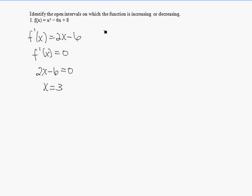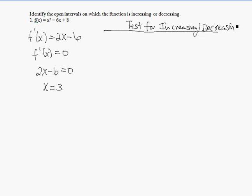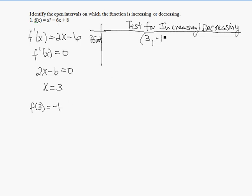So we want to set up a little table here — we're going to call it the test for increasing and decreasing. The first critical value we have is x = 3, because that was the critical value of the derivative. So we plug in f(3), which is equal to -1, giving us the point (3, -1).